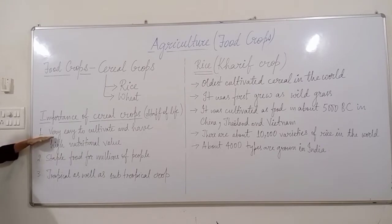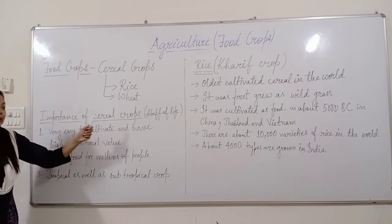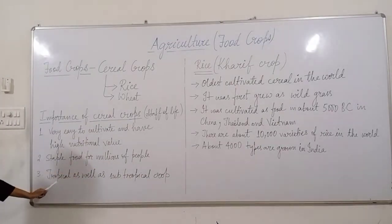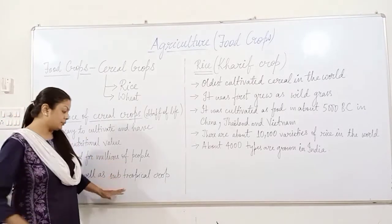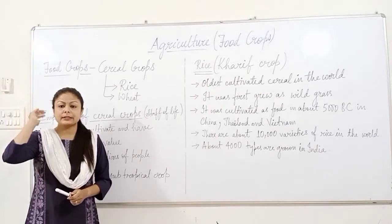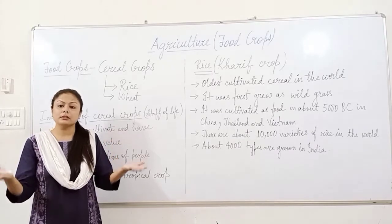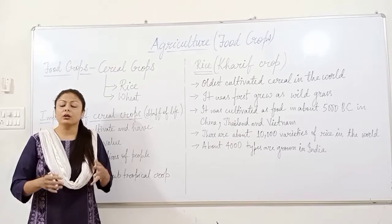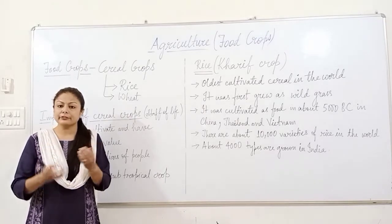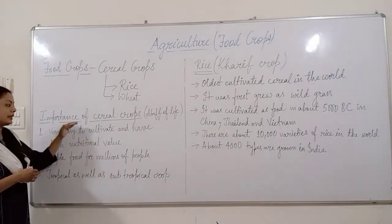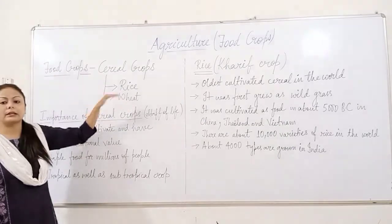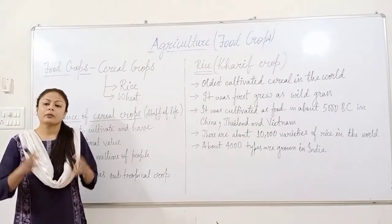Cereal crops are very easy to cultivate, have high nutritional value, and are staple food for millions of people. They are tropical as well as sub-tropical crops. For example, rice can be grown in the terrace hills of Kashmir, in the lowlands of Northern India, and in South India. Whether tropical or sub-tropical conditions, rice cultivation is suitable. Similarly wheat can also be grown in different climatic conditions, making rice and wheat the major cereal crops in India.